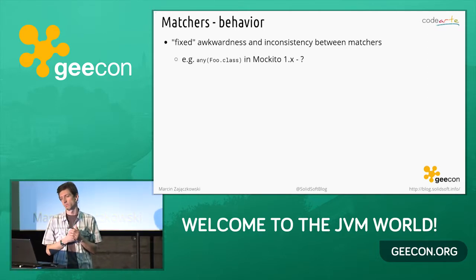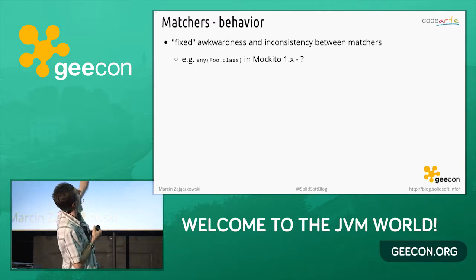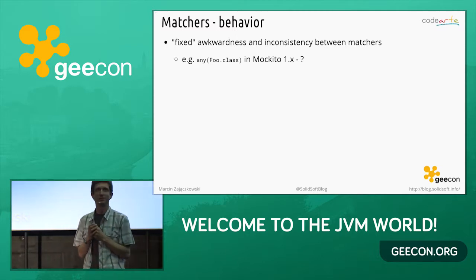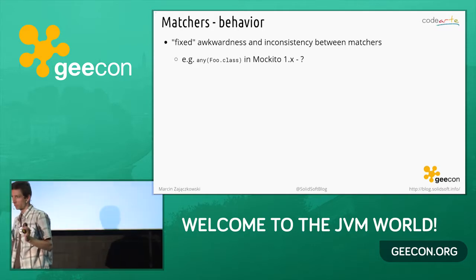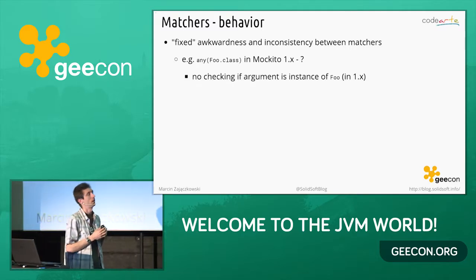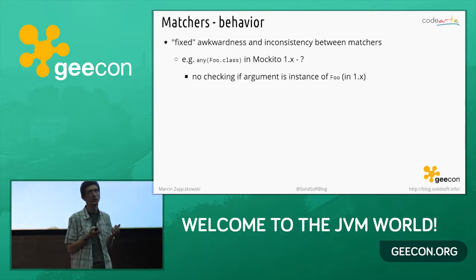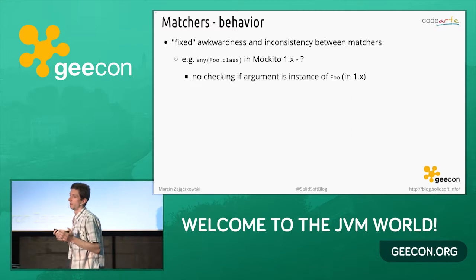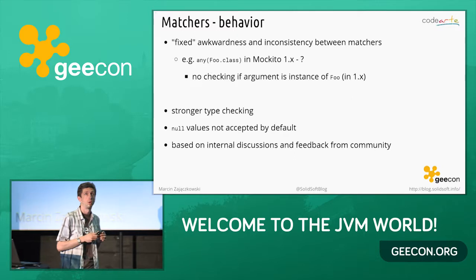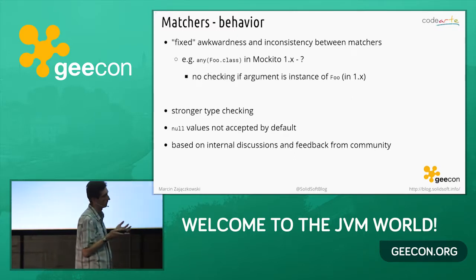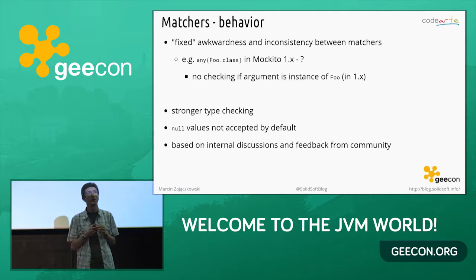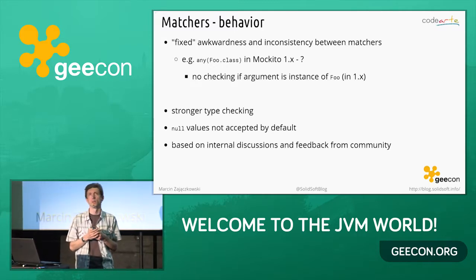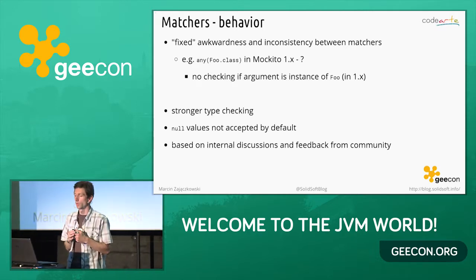Here's a question: what do you think was the matching result of the matcher named `any()` with a class given as a parameter? In Mockito 1, it turned out there was no checking if the argument is null, and no check that it's actually an instance of the given class. In Mockito 2, there is stronger type checking — you will not be able to pass something that is not an instance of the given class, and null values are not permitted by default.